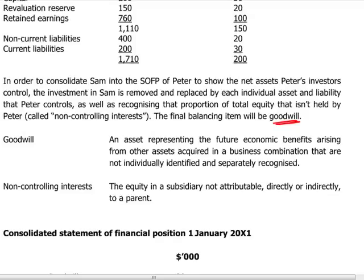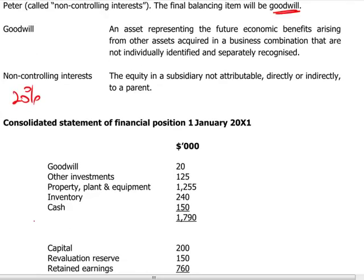Non-controlling interest is another concept we need to reflect. Since we bought 80% of the company we have control, but we don't own it 100%. When we bring in net assets on a line-by-line basis in the consolidated statement of financial position, we must reflect that we only own 80% by bringing in non-controlling interest of 20%, and that will be reflected in the equity section.